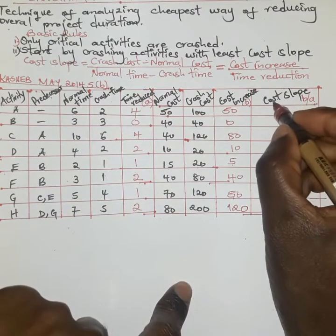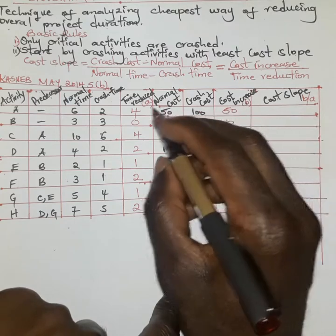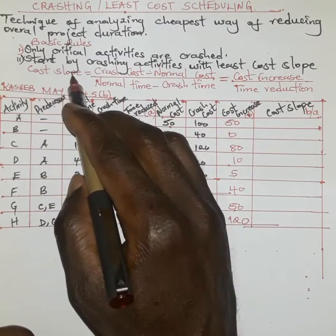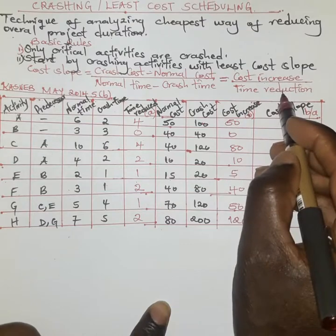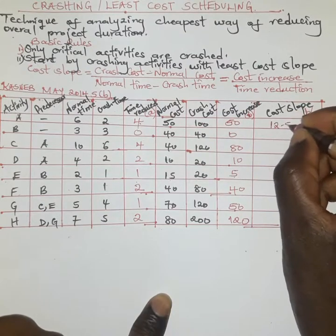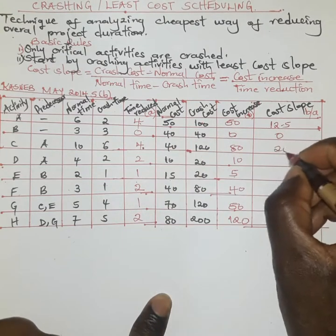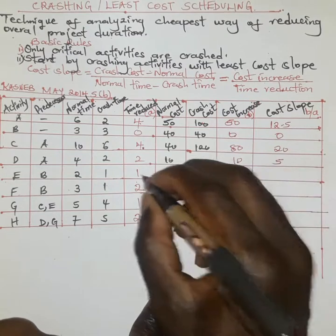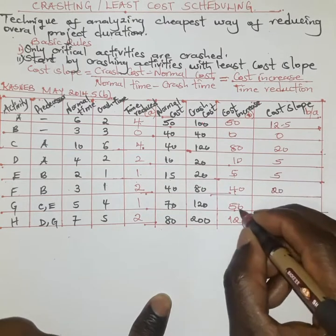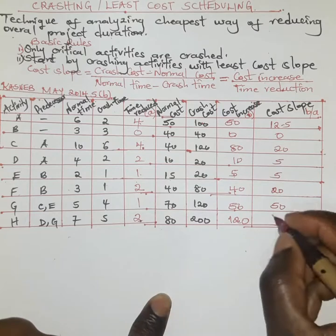To get the cost slope, we divide the cost increase by the time reduced. The formula is: cost slope = cost increase / time reduction. So: 50 divided by 4 gives 12.5; 0 divided by anything gives 0; 80 divided by 4 gives 20; 10 divided by 2 is 5; 5 divided by 1 is 5; 40 divided by 2 gives 20; 50 divided by 1 is 50; and 120 divided by 2 gives 60.